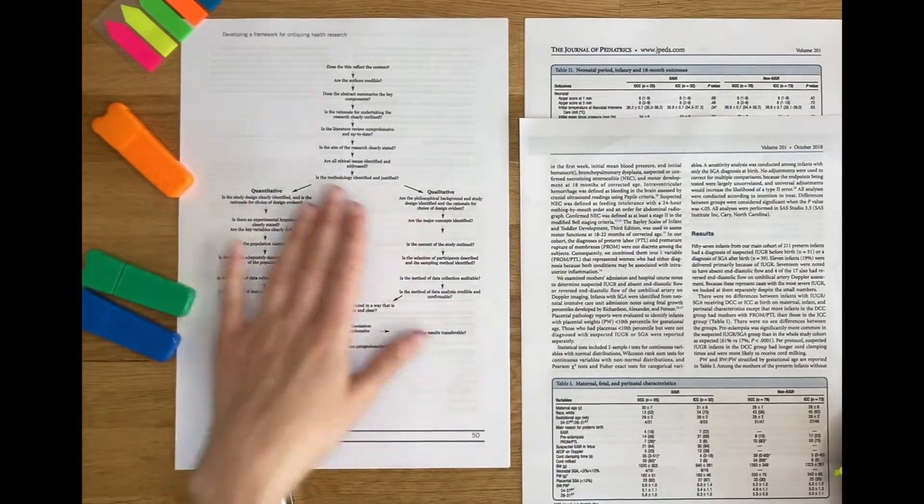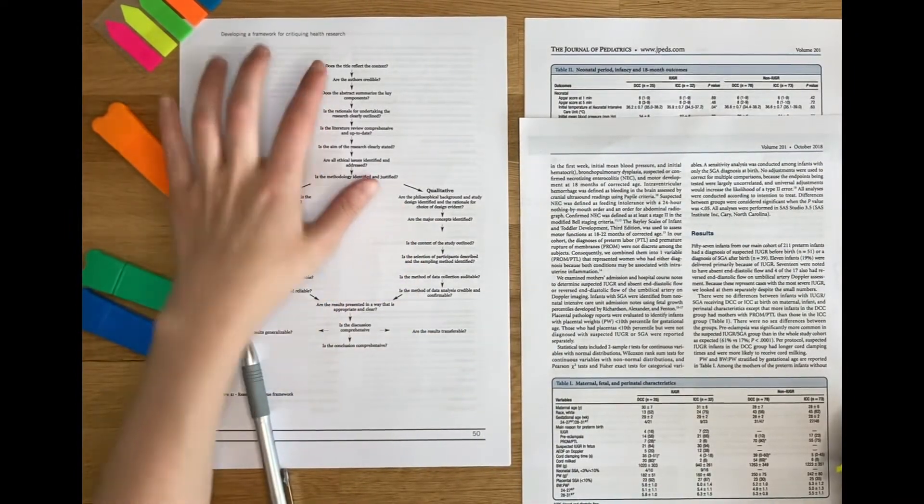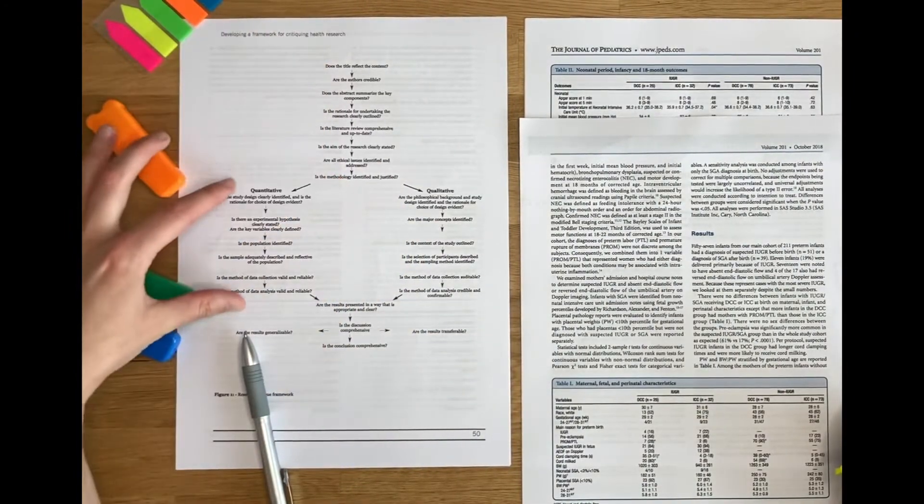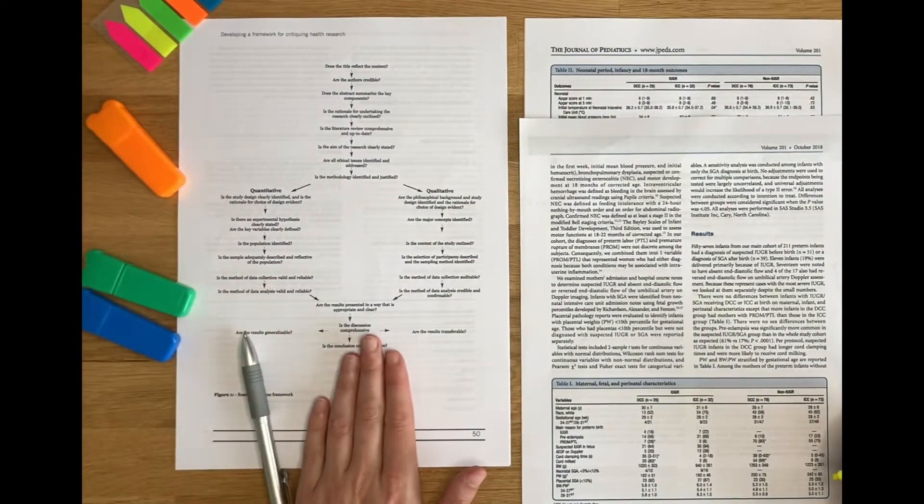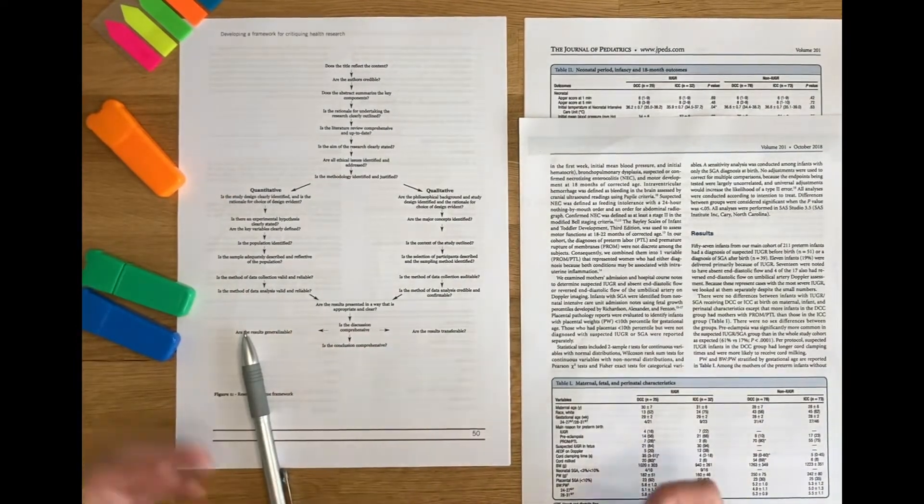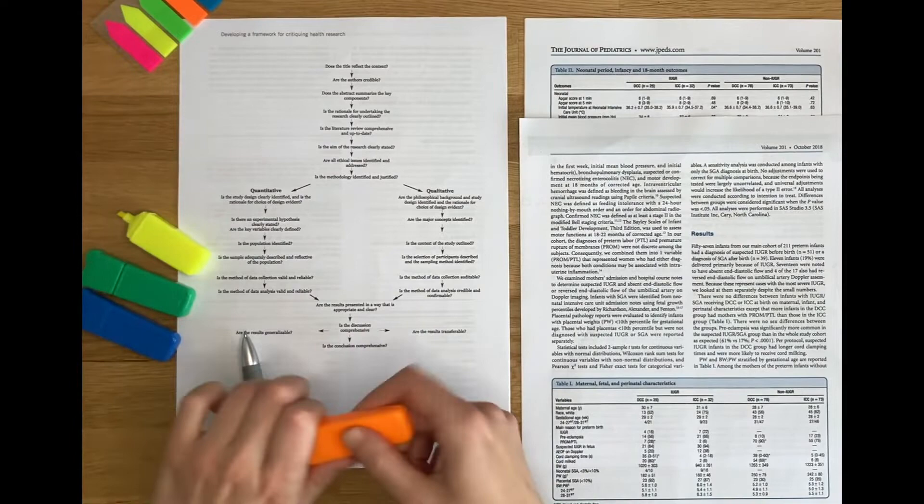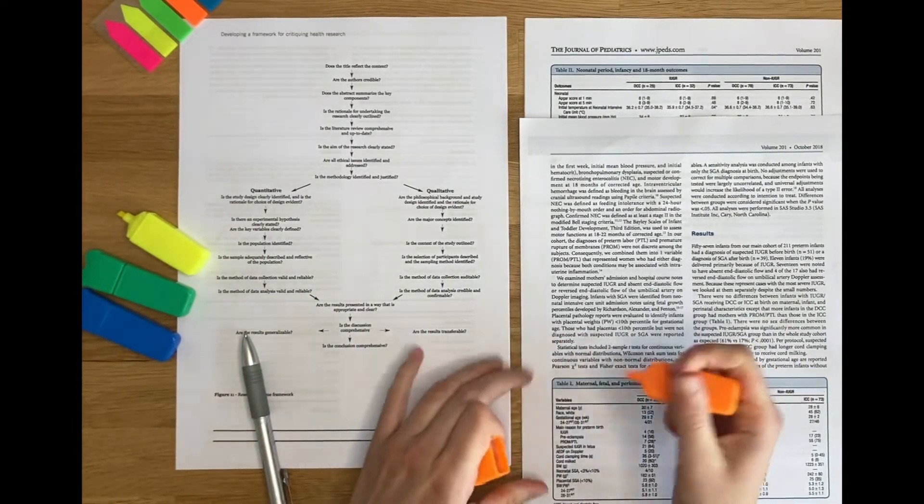And I can continue working through with my highlighters through each part. I might wish to change colors. For example, I may use one color on the highlighter for the initial part of the framework, a different color for the methods, a different color for the results. And that way I'll be able to tell which part I'm talking about when I go back to look at my notes.